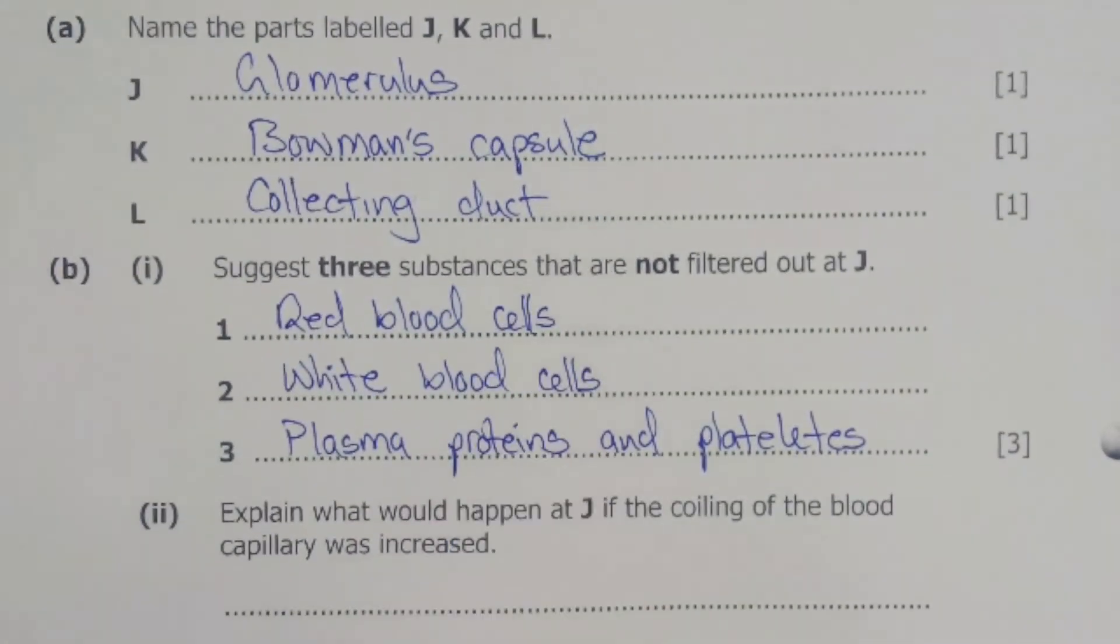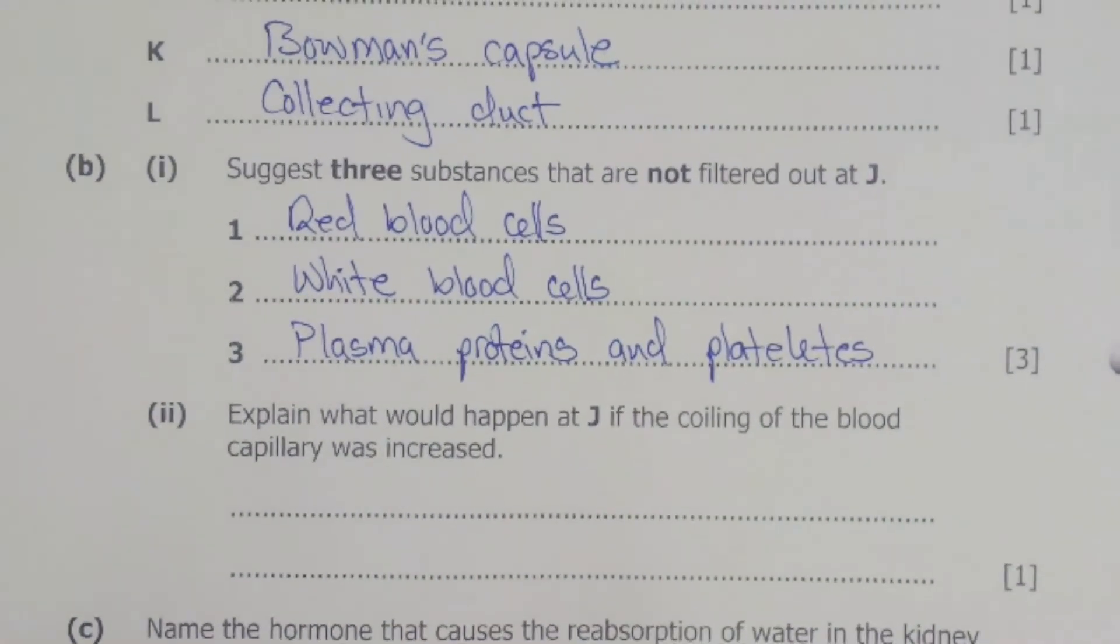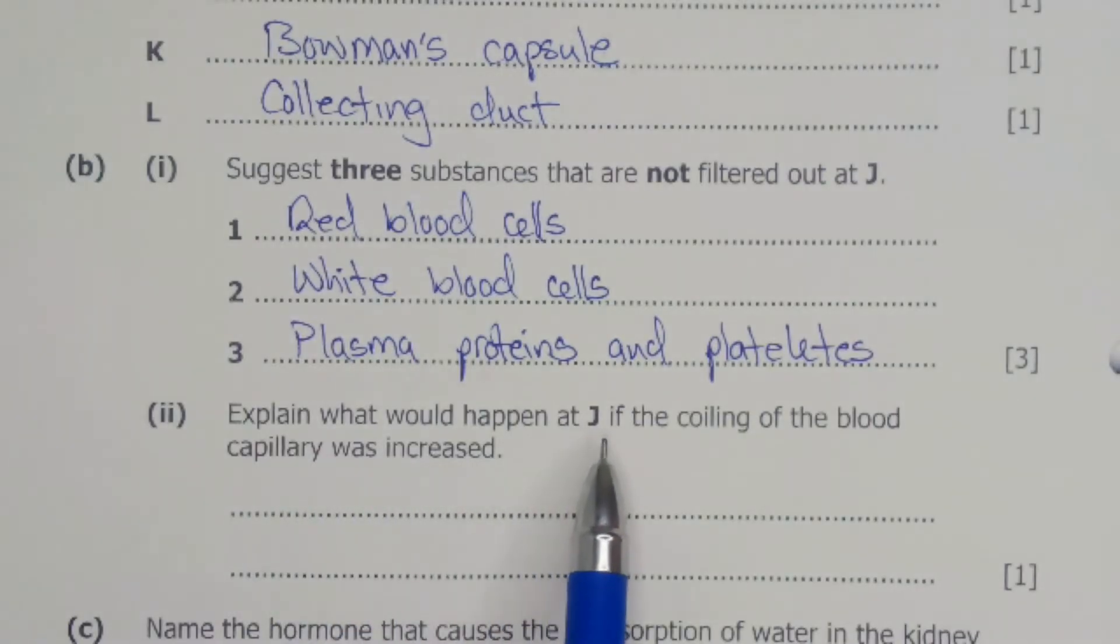We can now move on to the next part of the question, which is B2. B2 says: Explain what would happen at J if the coiling of the blood capillary was increased. So we are talking about the glomerulus being increased.